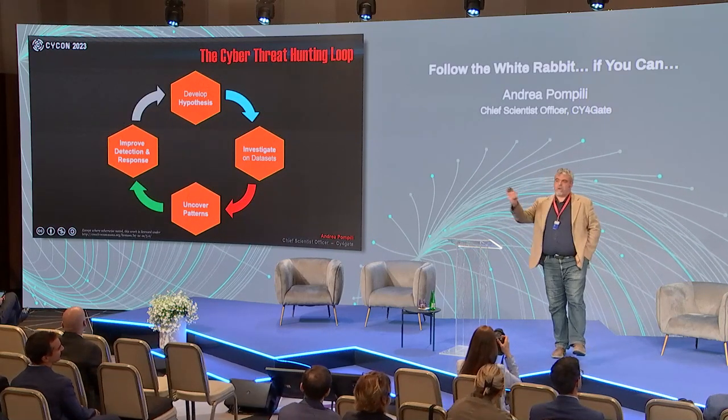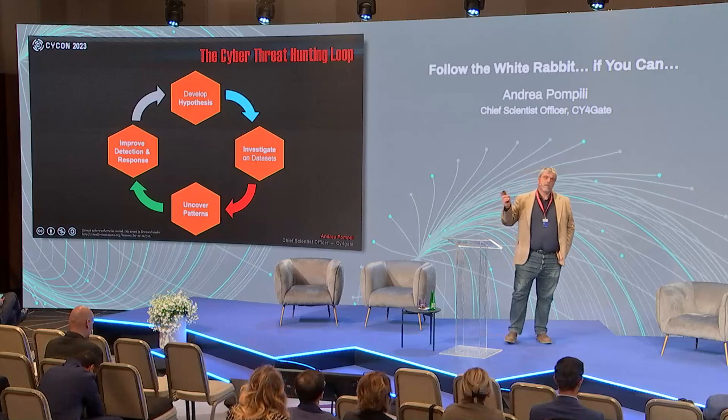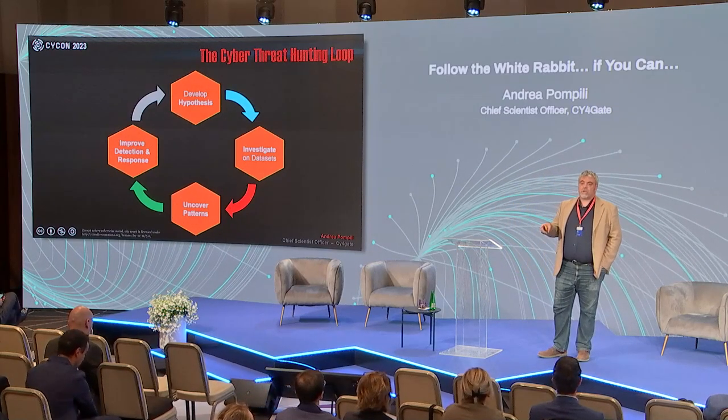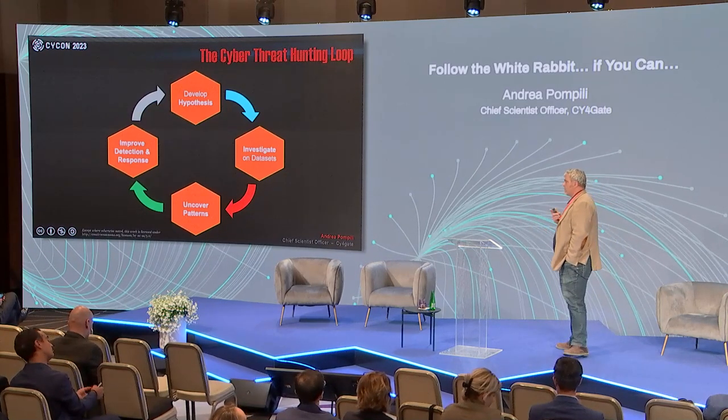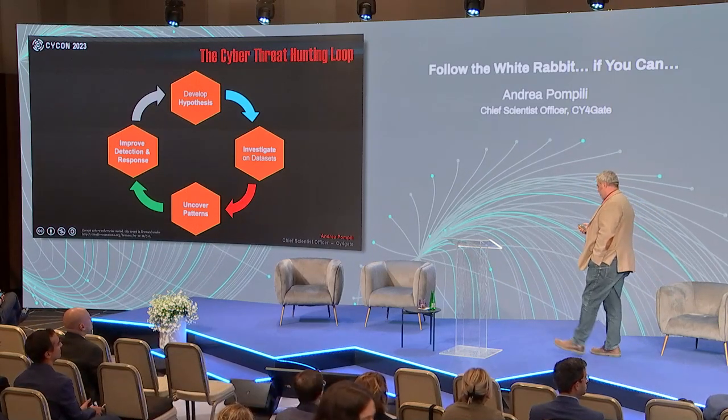Everyone knows the threat hunting loop. The concept is simple — four steps. First, you develop a hypothesis: something wrong is happening in my network, perhaps because someone called in the night or because of threat intelligence. Second, you investigate the hypothesis by checking your datasets. Third, you uncover patterns — understanding why something is bad and how to detect it more effectively. Finally, you improve your detection and response posture. This cycle is continuous.